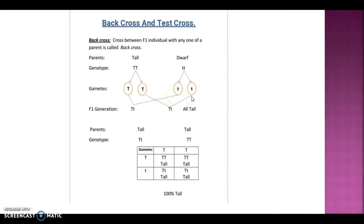In the F1 generation, all individuals are phenotypically tall, but they are heterozygous tall.